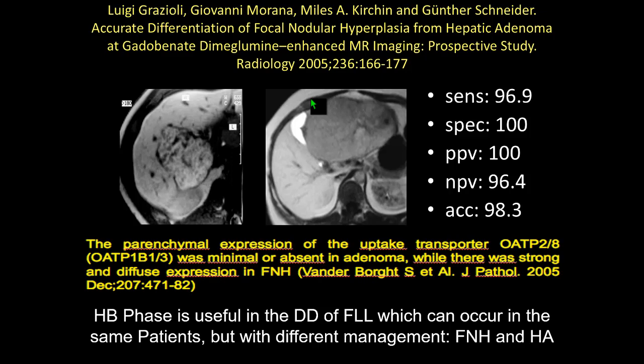Why do FNH and adenoma behave differently? The expression of OATP8 — the transporter used to take up the contrast agent — is different: minimal or absent in adenoma, while there is a strong and diffuse expression in FNH. That's why the contrast agent can enter FNH but cannot enter adenoma — with only one exception.